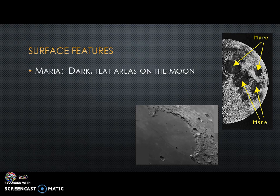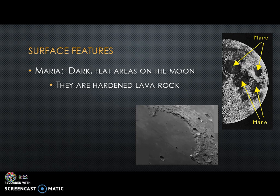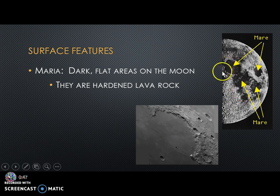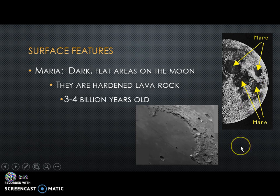The first surface feature is called the maria. These are dark, flat areas on the moon's surface — basically hardened lava rock that formed a long time ago. They look really flat and smooth, as you can see in these pictures. We estimate the maria to be three to four billion years old.